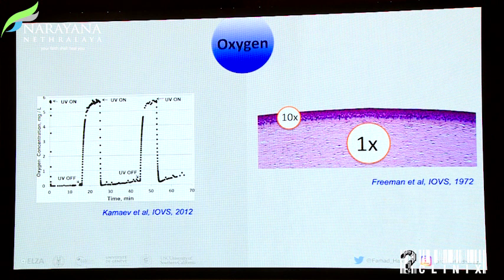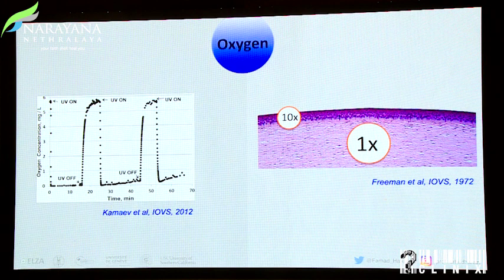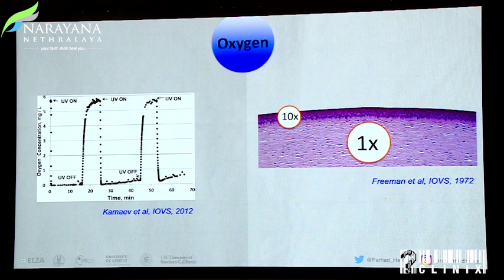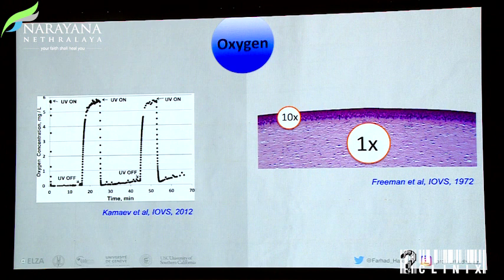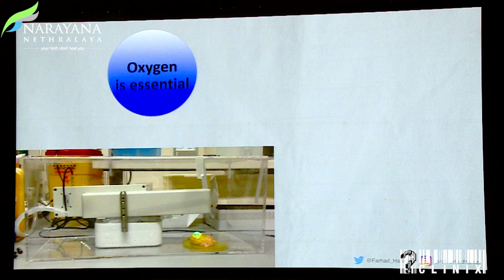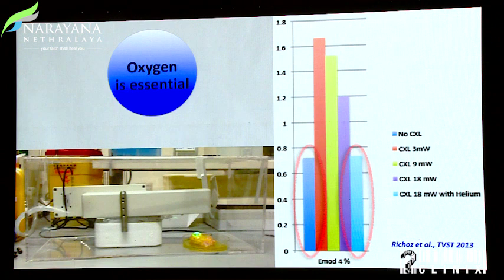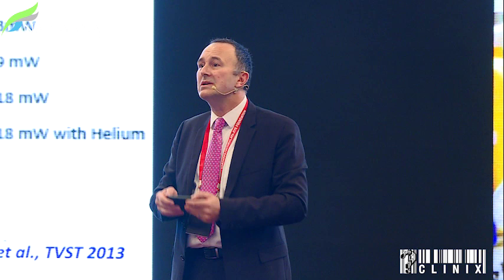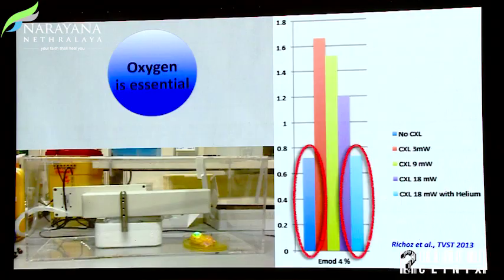The other factor is that the epithelium consumes oxygen — it needs ten times more than the stroma. This is basic textbook physiology from the early seventies. When you have an intact epithelium, you have a huge barrier for oxygen to penetrate, and the little oxygen that does penetrate gets consumed before it even reaches the stroma. So limited amounts of oxygen are present in the corneal stroma when the epithelium is intact. We checked this in a simple experiment by performing cross-linking under an oxygen-free atmosphere — a plexiglass hood flooded with helium. No oxygen means zero reaction; oxygen present gives the typical increase in biomechanical stiffness we all know.